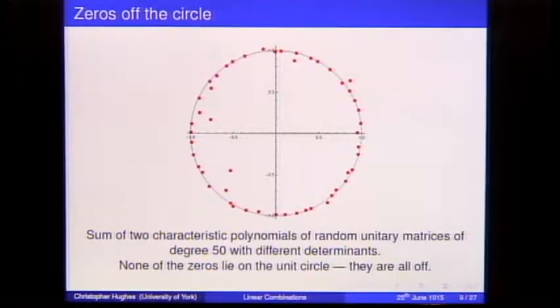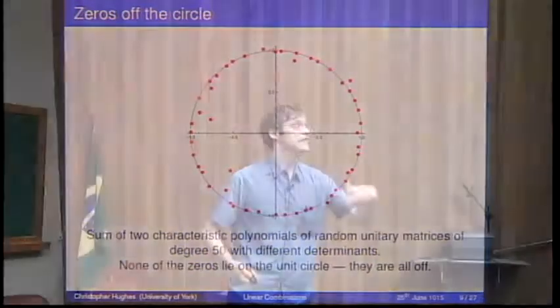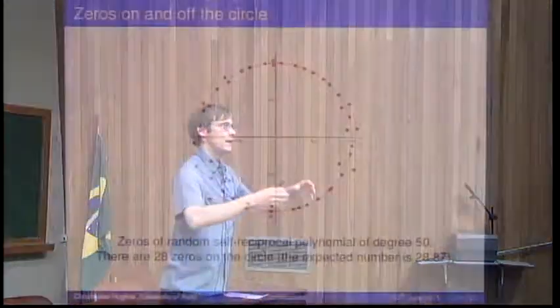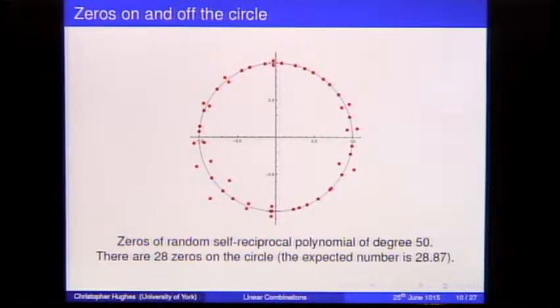Here I've taken two random unitary matrices, found their characteristic polynomials, added them, and plotted the zeros. You can see they cluster around the unit circle, but none of them lie on it — none have absolute value equal to one. Then I took a self-inversive polynomial — first half of coefficients IID Gaussian, second half fixed by the self-inversive property — and for a 50×50 matrix, 28 of those zeros are on the circle. The expected number is 28.87.